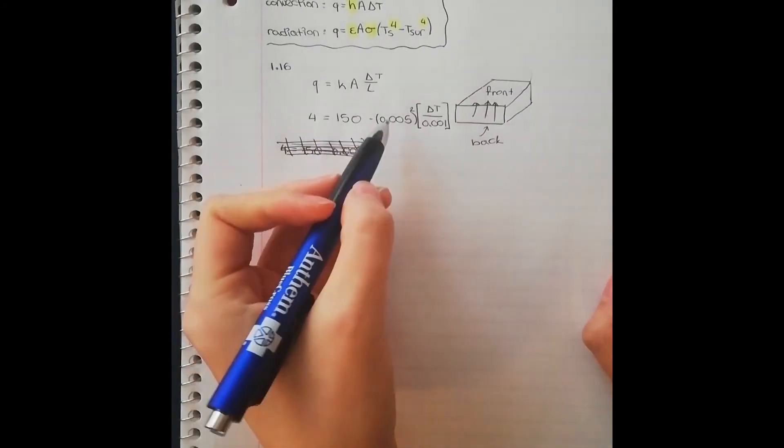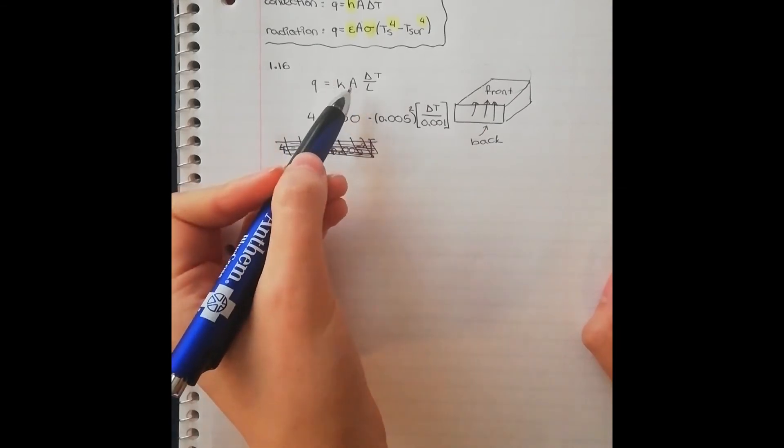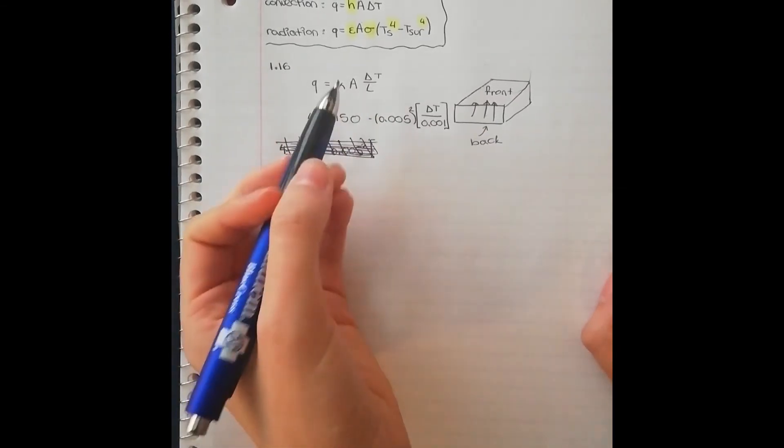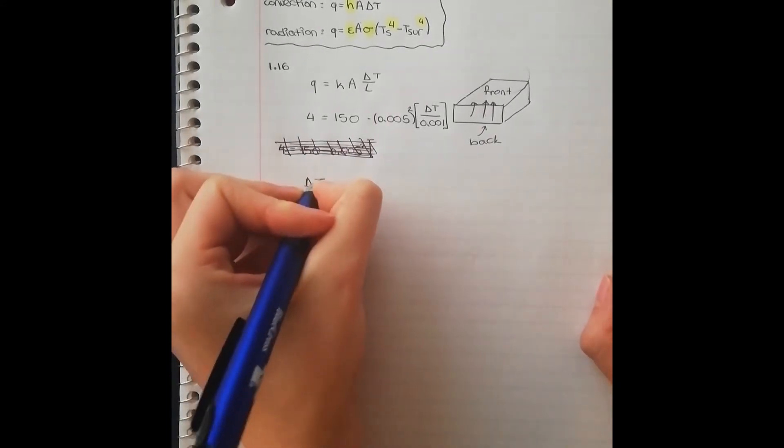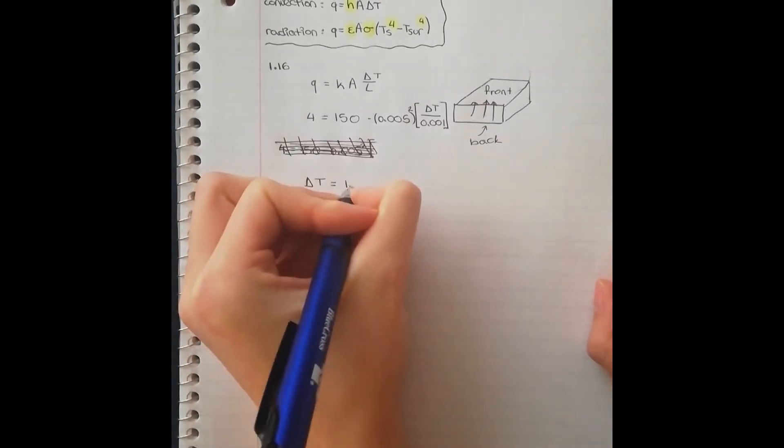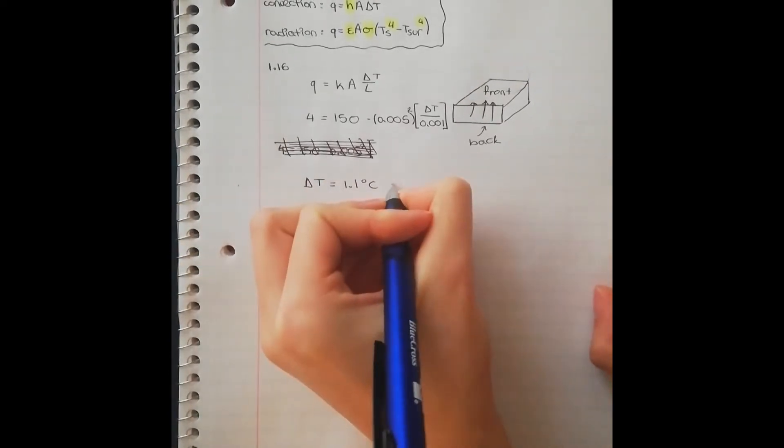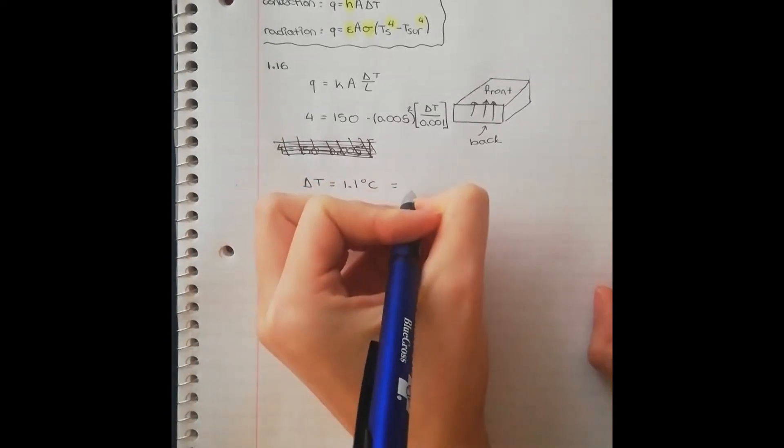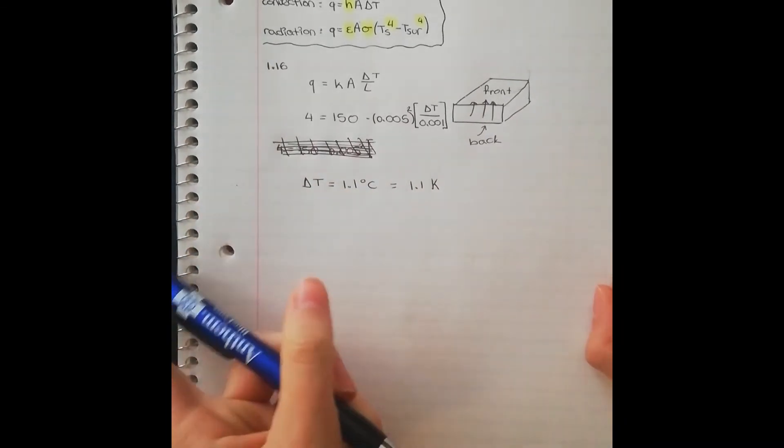Okay, so I filled in 0.005 squared for the area, and 0.001 for the length. And so now you are ready to solve for delta T. So by solving this equation, you find that delta T is equal to 1.1 degrees Celsius. Now know that because we're talking about a difference in temperatures, this is also 1.1 Kelvin. It's exactly the same temperature difference.